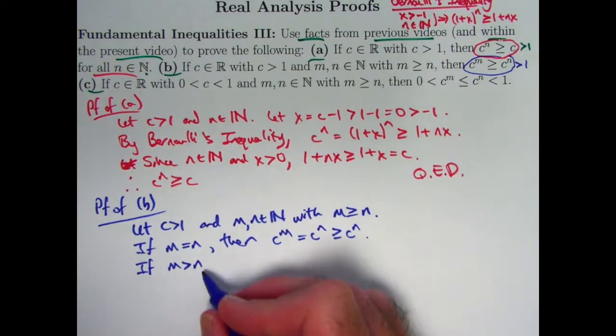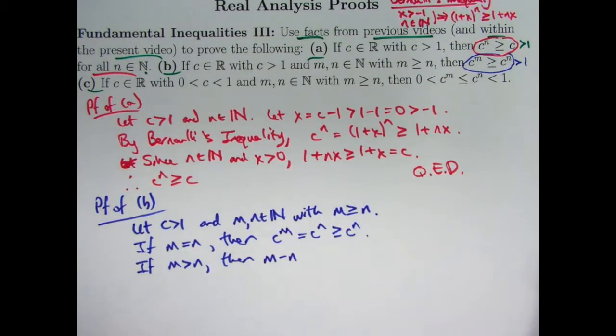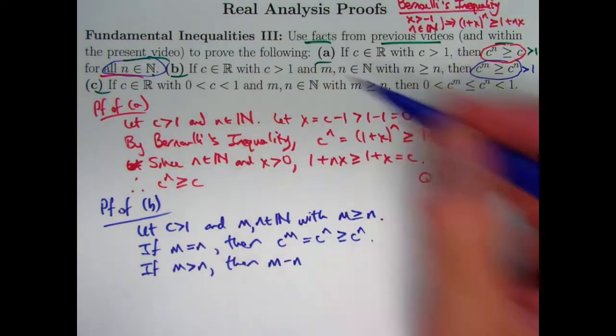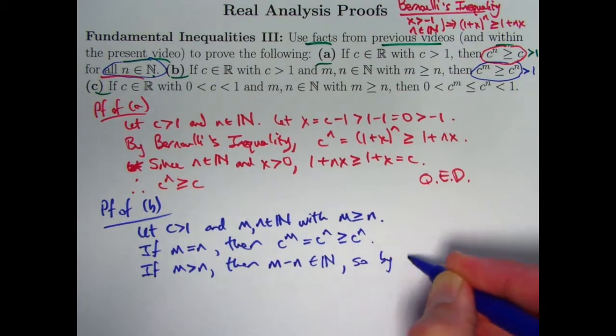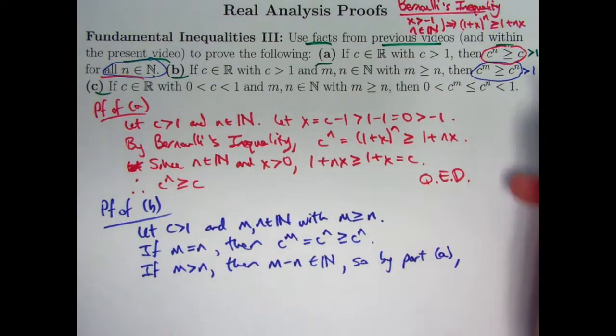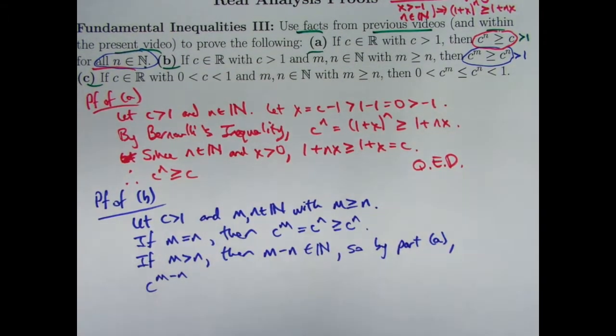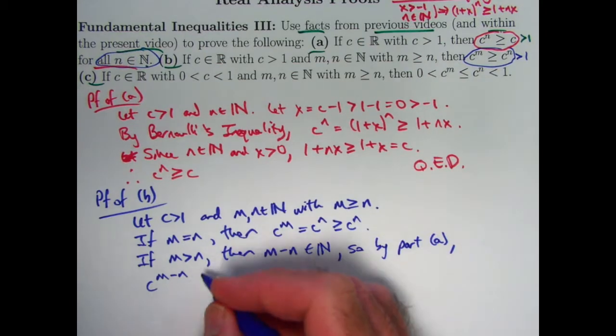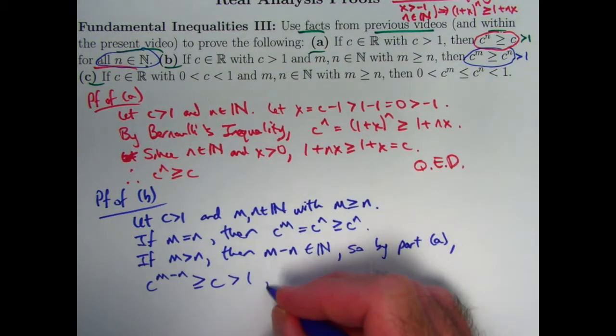What about the other case if m is strictly greater than n? And why am I doing a separate case here? Why do I need two cases? Well, when m is strictly greater than n, then I can say m - n is strictly greater than zero. It does not equal zero, and I will need that to apply part A, because I'm assuming that power in part A is strictly positive. m - n is a natural number. So by part A, I can raise c to the m - n power. By part A, I can say this is greater than or equal to c, which does happen to be bigger than one. Again, I'm assuming c is bigger than one.